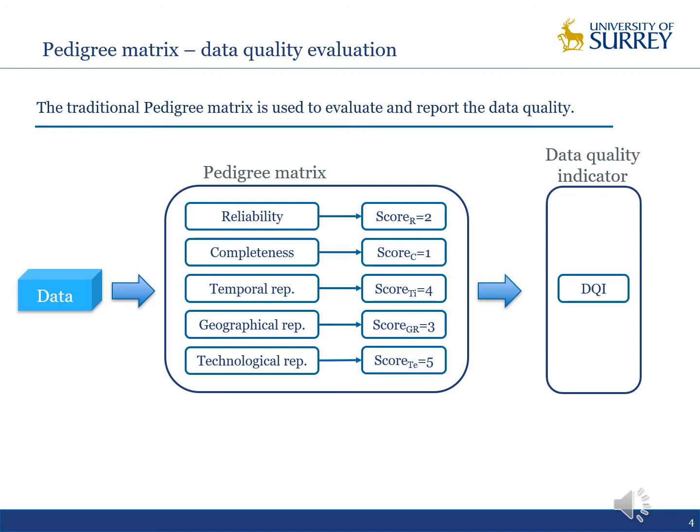In this study, we introduced the concept of Pedigree. As its name implies, it refers to the background information of the data by which we can guarantee the quality of the data. The traditional Pedigree Metrics is commonly used to evaluate and report data quality. For example, given our targeted data, its quality can be evaluated from five aspects: Reliability, Completeness, Temporal, Geographical, and Technological representativeness.